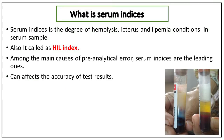What is serum indices? Serum indices is the degree of hemolysis, icterus, and lipemia conditions in a serum sample, also called the HIL index. Among the main causes of pre-analytical errors, serum indices are the leading ones and can affect the accuracy of test results.